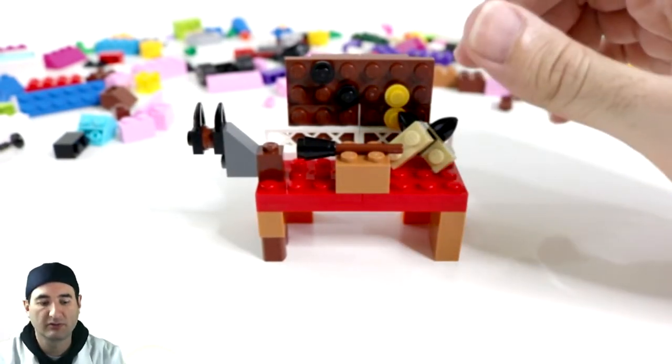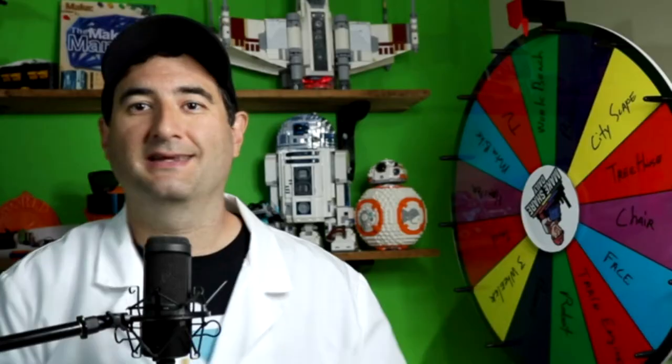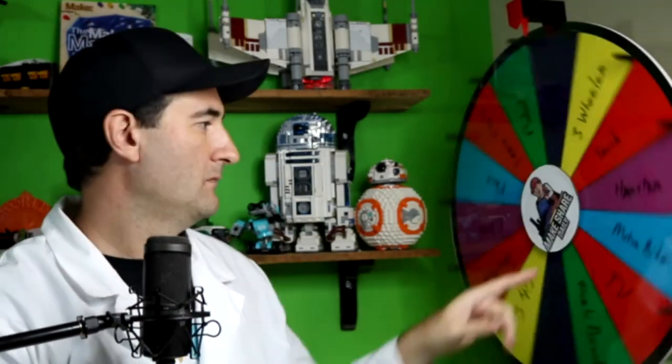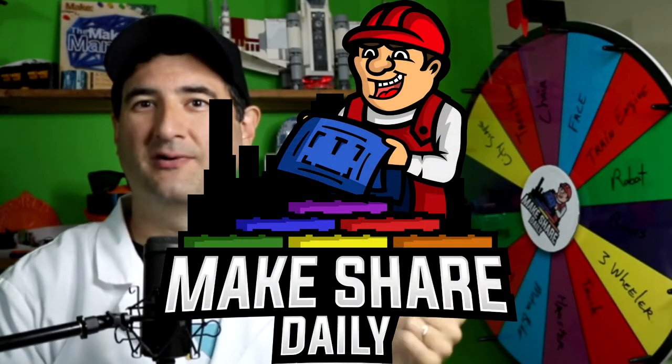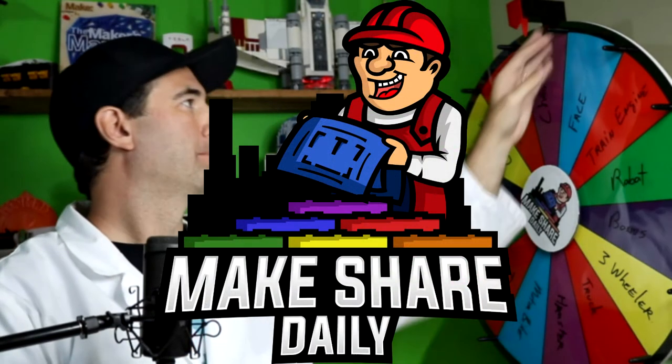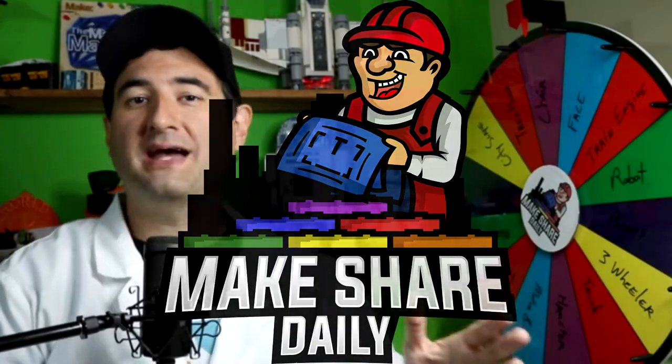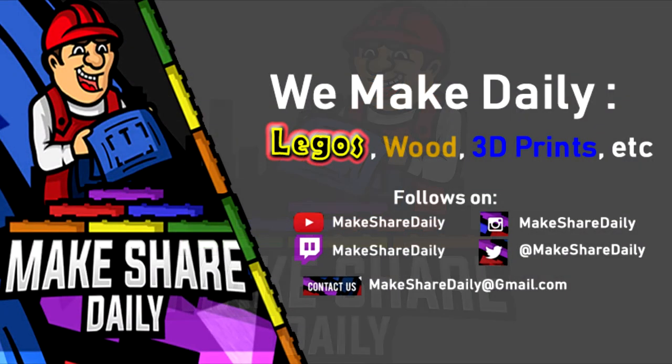And let's go spin the wheel to see what we're going to learn, what we're going to build tomorrow. And today we're going to do another Lego five minute build. So let's see what the maker wheel shows us we're going to build today. And it's a chair. So I got to build a chair. That sounds pretty simple.